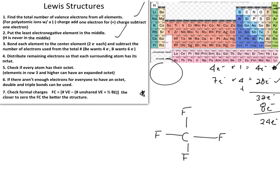Each fluorine bonded to carbon already has two electrons from that bond toward its octet. However, that means each fluorine needs an additional six electrons to be satisfied. We distribute the 24 remaining electrons to the fluorines, giving each fluorine six electrons.